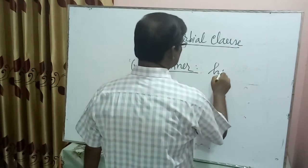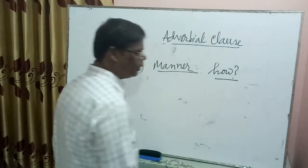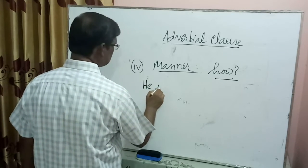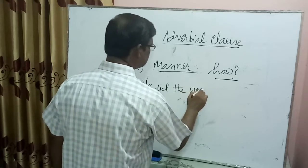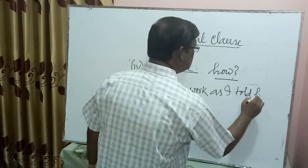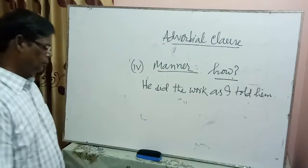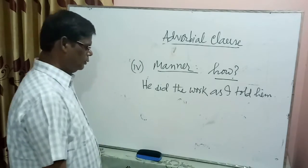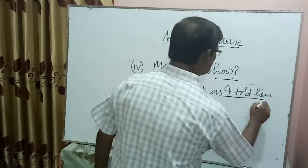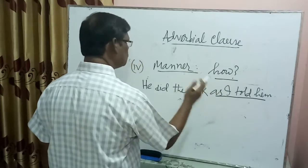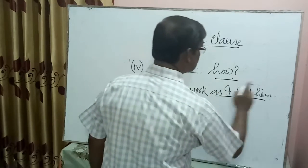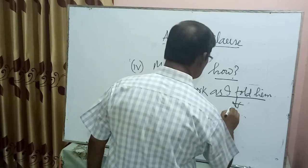For Adverbial Clause of Manner, we ask the question 'how' with the main clause. For example: 'He did the work as I told him.' How did he do the work? As I told him. So this clause indicates the process or manner of his doing the work. Here we ask 'how' and the answer 'as I told him' is the Adverbial Clause of Manner.